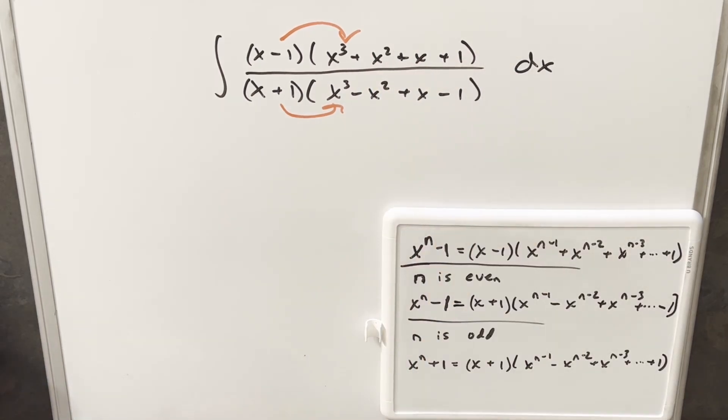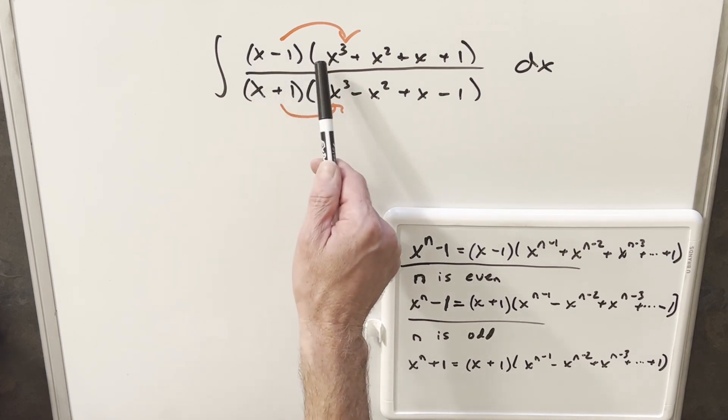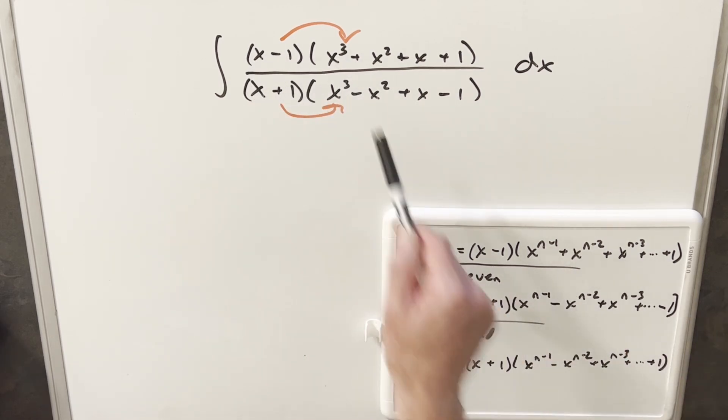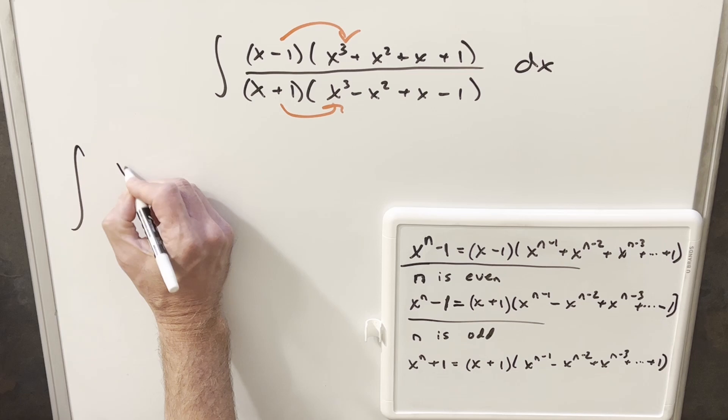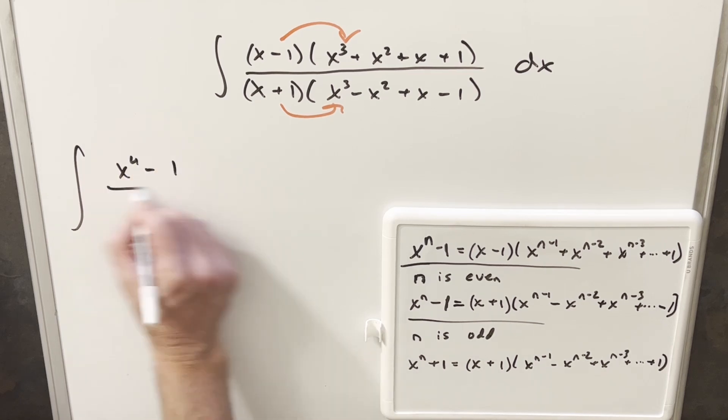So for our numerator here, what I want to notice is it's actually in the exact form that we have right here. We have our x minus 1, and then we have this descending x^(n-1), x^(n-2). Well, that's exactly what we have here, x minus 1 times all the terms summed together. So like if n minus 1 is 3, then n is 4, so we'll rewrite our numerator as x to the 4th minus 1.